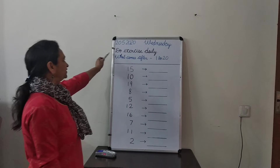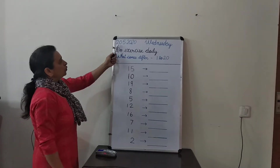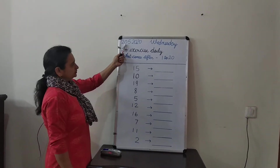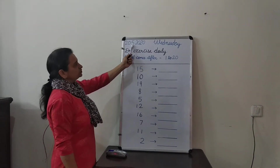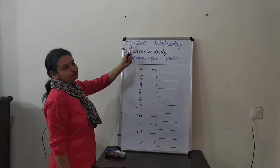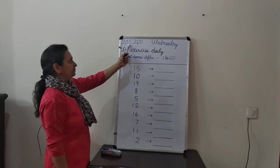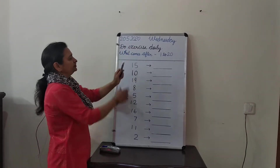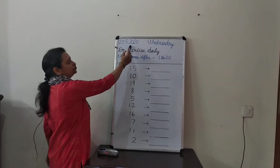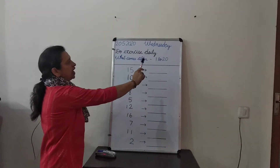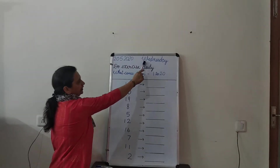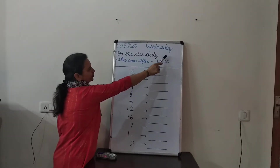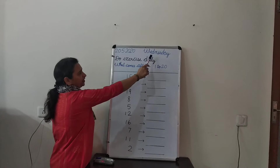We start our day with the date. What is our day today? The fifth month, May, is going on, and the year is 2020. The day today is Wednesday.